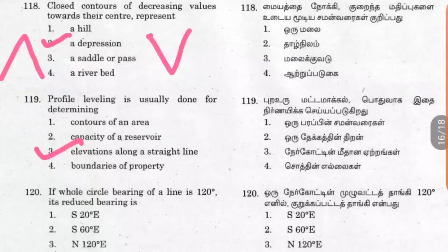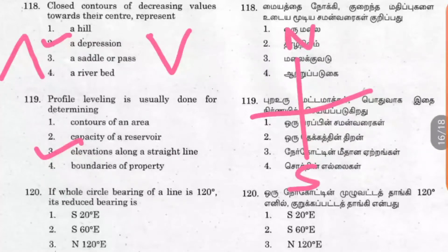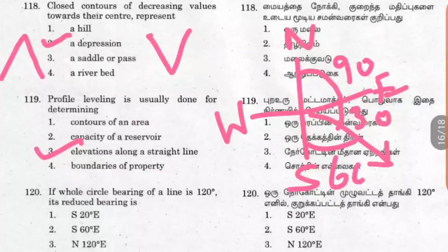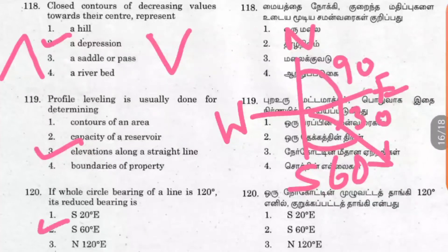Question 120: If the whole circle bearing of a line is 120 degrees, its reduced bearing is what? The whole circle bearing is measured from north. 120 degrees is 90 plus 30, placing the line in the southeast quadrant. The remaining angle from south is 180 minus 120 equals 60 degrees. Since the line is nearer to south and towards east, the reduced bearing is South 60 degrees East. Option 2 is correct.